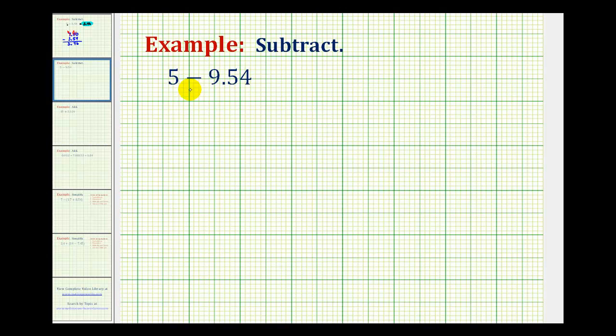In this example, we want to subtract a decimal from a whole number, but notice how the decimal we're subtracting is actually larger than the whole number, so this result is going to be negative.